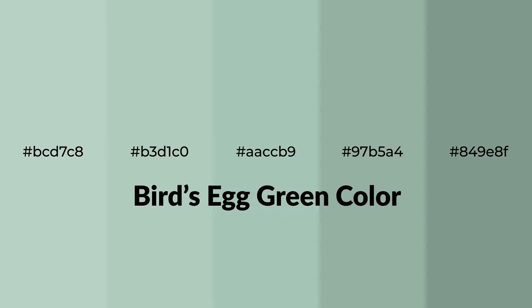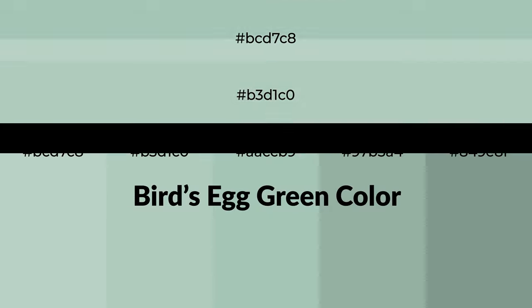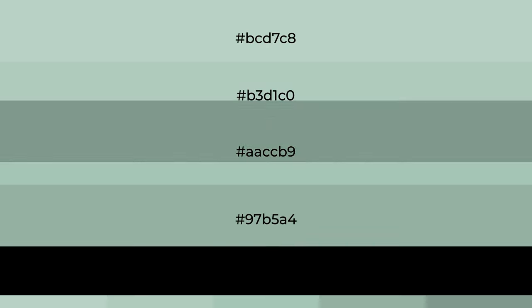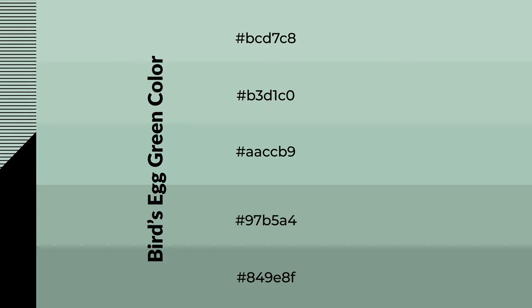Cool shades of bird's egg green color with green hue for your next project. To generate tints of a color, we add white to the color, and tints create light and exquisite emotions. To generate shades of a color, we add black to the color, and it is used in patterns, 3D effects, layers and shades create depth and drama.